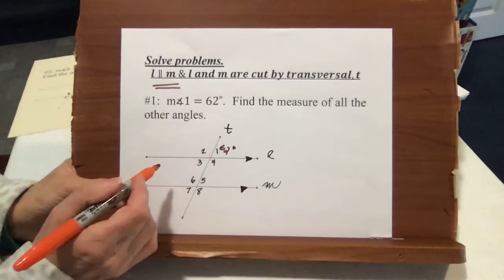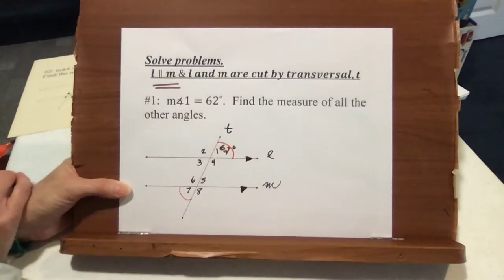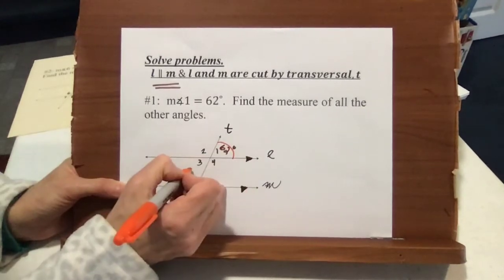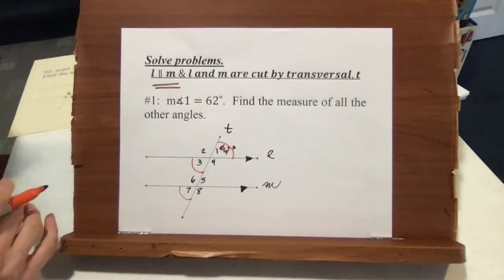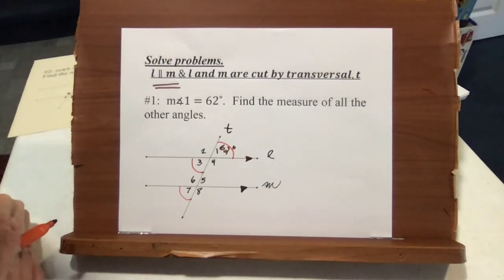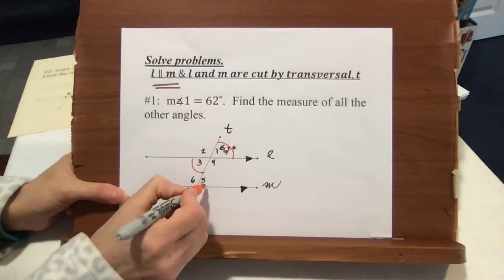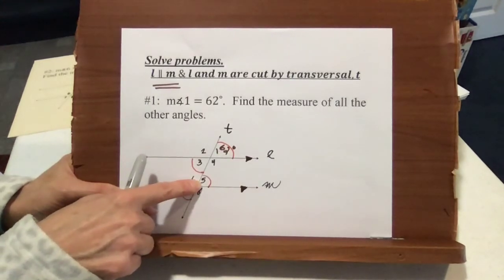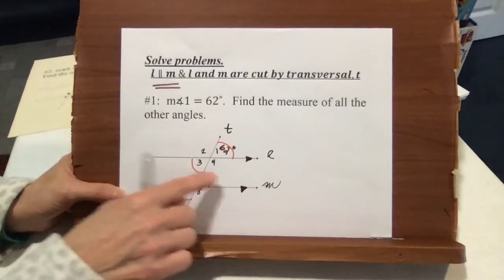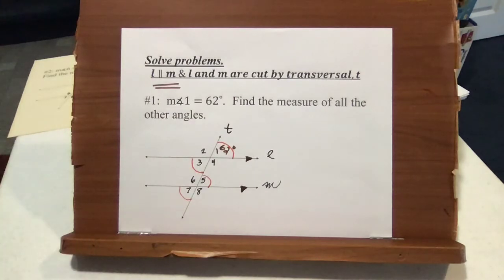Since we're dealing with angle 1, we want the measure of all the other angles. Angle 1 is congruent to angle 7 by alternate exterior angles. Angle 1 is also congruent to angle 3 because they're vertical angles. Vertical angles still play into this, but they're not specific angles formed by parallel lines and the transversal. We also know angle 3 is an alternate interior angle with angle 5, and angle 1 is a corresponding angle to angle 5, so they're congruent. Angles 5 and 7 are vertical angles as well.